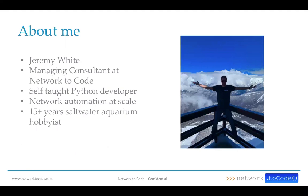A little bit about myself. My name is Jeremy White. I'm a managing consultant for Networks of Code, a boutique network automation startup based out of New York. We focus on vendor-agnostic, tool-agnostic, open-source network automation solutions — Cisco, Juniper, Arista, F5. We automate everything. We do a lot with Nornir, Ansible, raw Python, and Go. Everything I've done has been self-taught. I do not have a computer science degree or any formal training around software development.